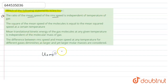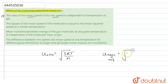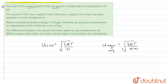So μ_rms will be equal to √(3RT/M), and μ_mean, also called the average speed, will be equal to √(8RT/πM). When we calculate the ratio μ_mean upon μ_rms, the square roots cancel and we get: